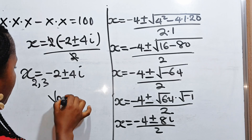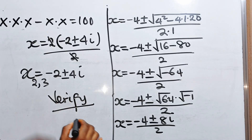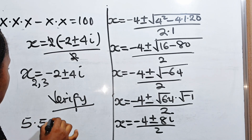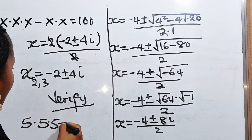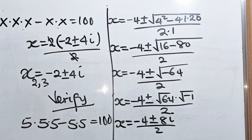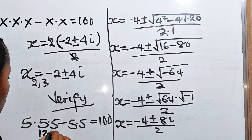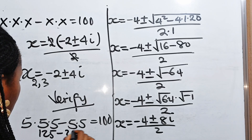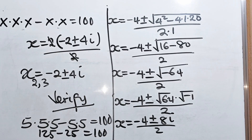Now let us verify. We got x to be 5. So 5 multiplied by 5 multiplied by 5, minus 5 multiplied by 5, equals: 5 times 5 is 25, 25 times 5 is 125, minus 5 times 5, which is 25, equals 100. You can see that 125 minus 25 gives us 100, and 100 equals 100. So that proves the answer we got is correct.